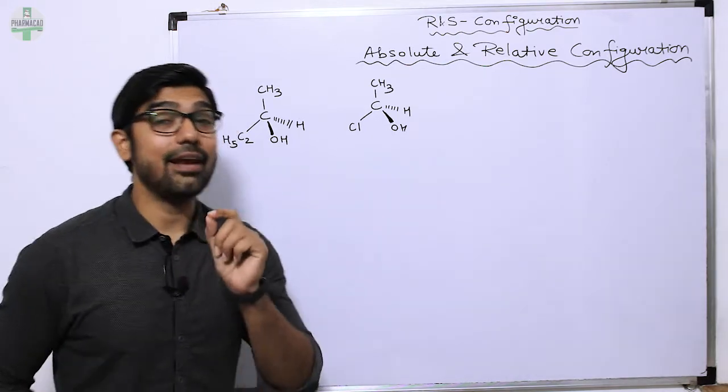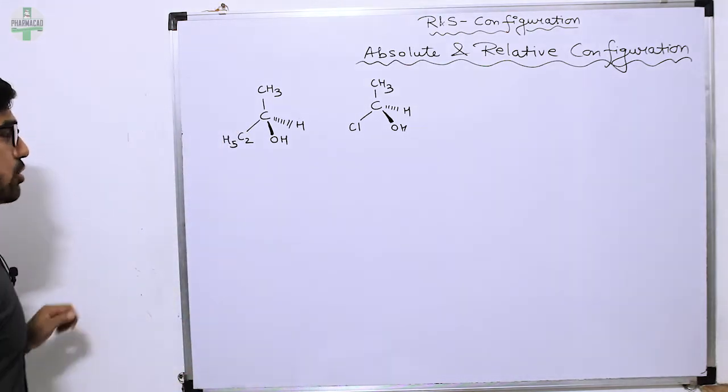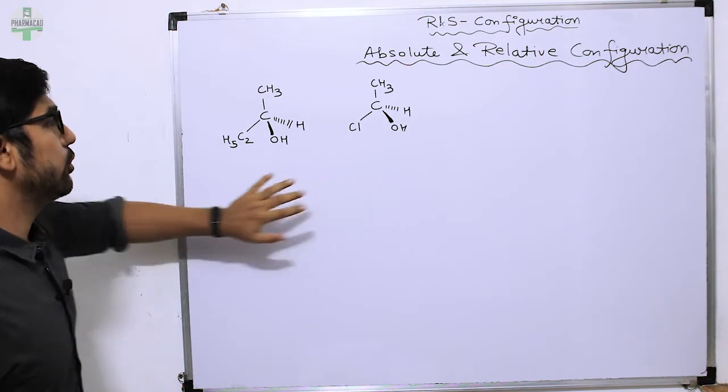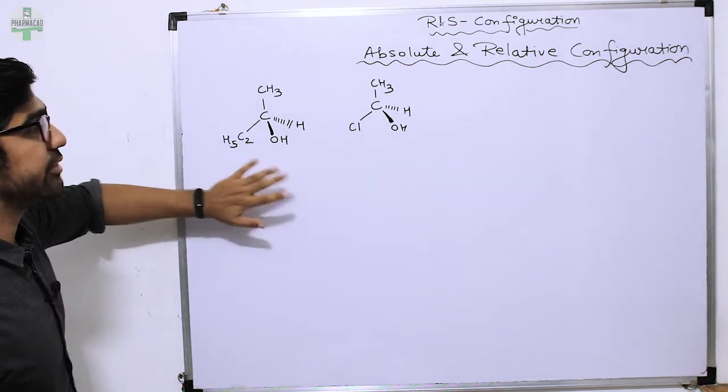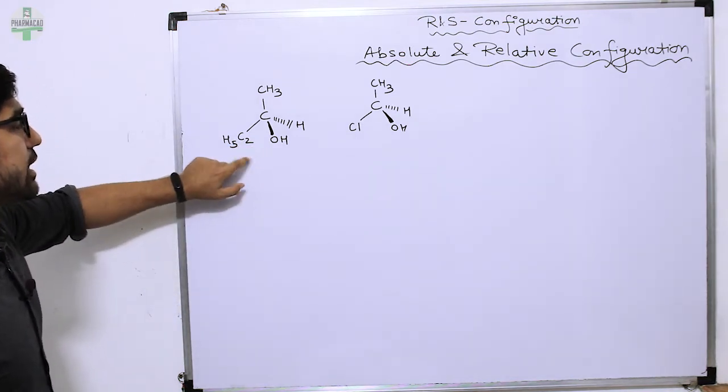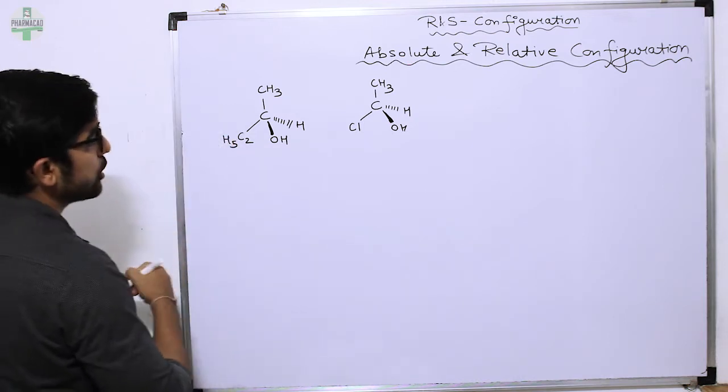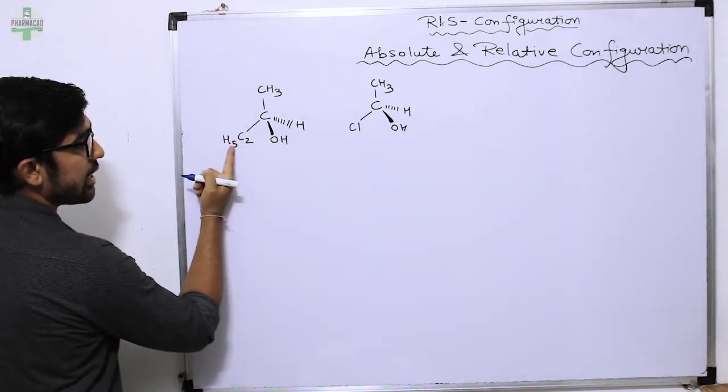Let's talk about absolute and relative configuration. I have drawn two molecules here, so let's find the R/S configuration of these two molecules. First, this configuration, we have a chiral center. First priority is Cl, and then C2H5.